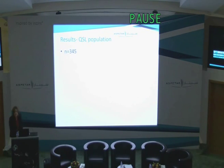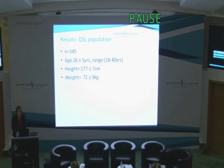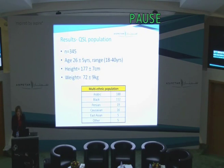Here are the results. For this study, we have 345 asymptomatic males included in the normative profiles. Their average age is 26 years, 177 centimetres tall and 72 kilograms. Comparing this to other football populations published in the literature, the footballers here in Qatar are slightly shorter but certainly way less than what we're familiar with as a mean. The other unique thing about this population is that approximately half of our athletes are of Arabic ethnicity, with a number of other categories making up the remaining half.